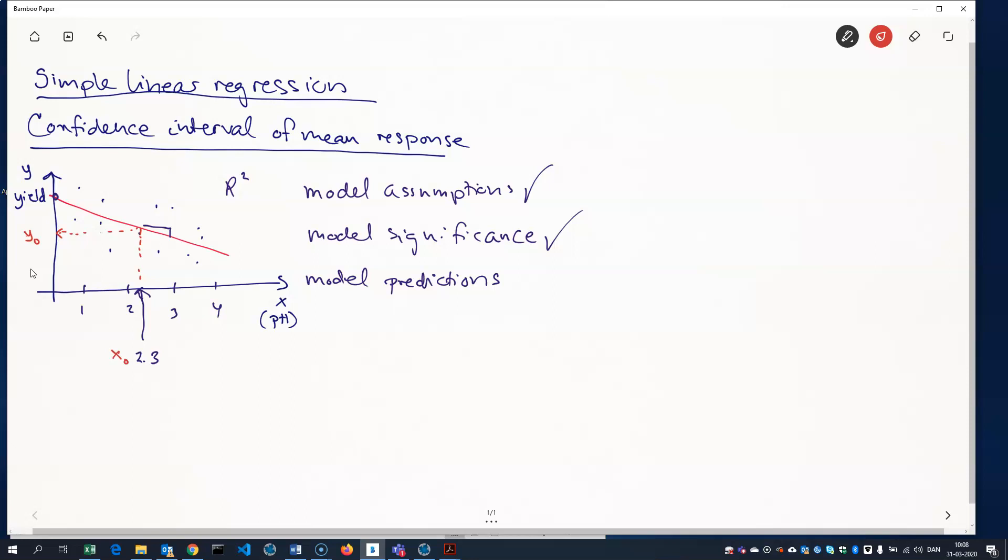But we want to do better than that, because we know that if we went out and collected data again, doing experiments at different pH levels, we'd get another set of data points, and we'd get another regression line here. Hopefully, it wouldn't differ too much, but it probably wouldn't be the same line. And if we did the experiment a third time, we'd get a third line. This is prone to statistical error. So, giving just one number here is probably not enough.